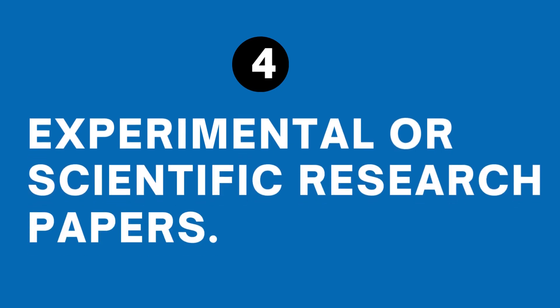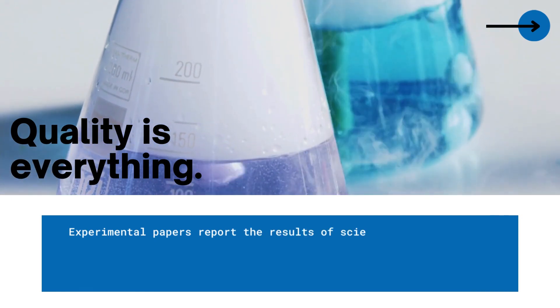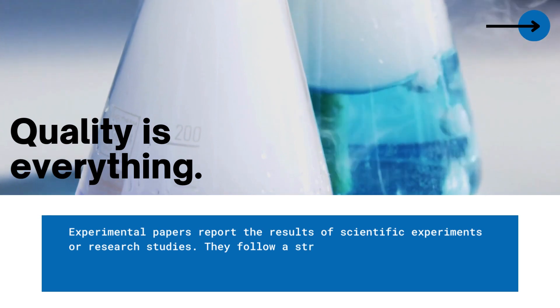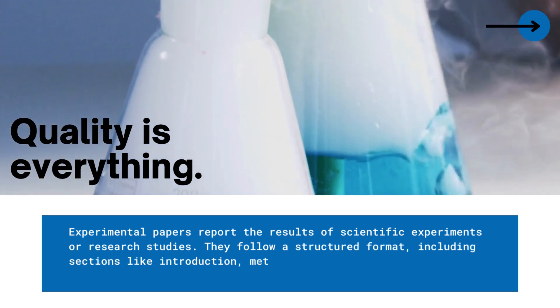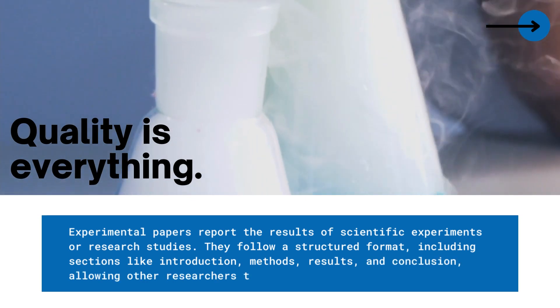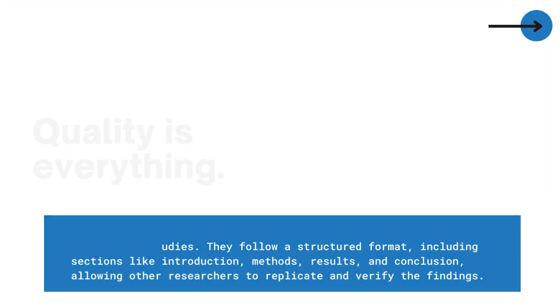4. Experimental or Scientific Research Papers. Experimental papers report the results of scientific experiments or research studies. They follow a structured format, including sections like Introduction, Methods, Results, and Conclusion, allowing other researchers to replicate and verify the findings.